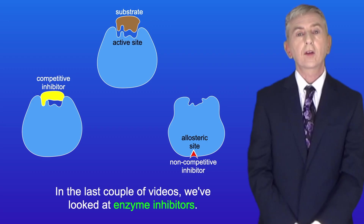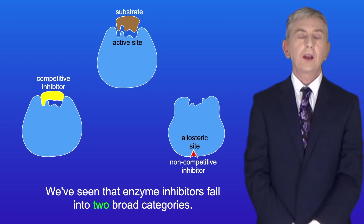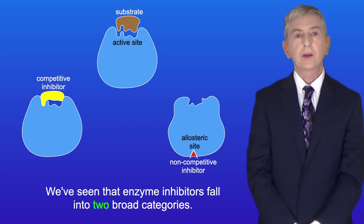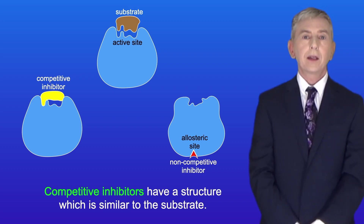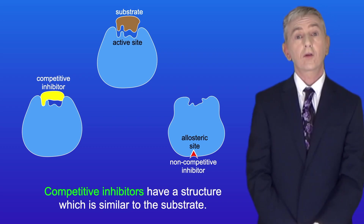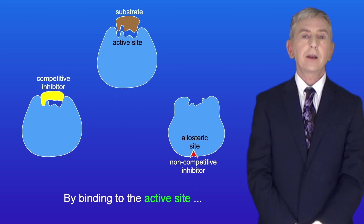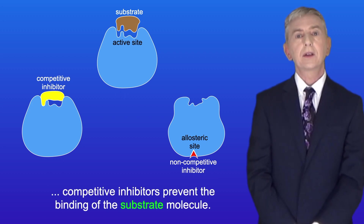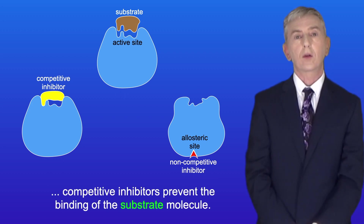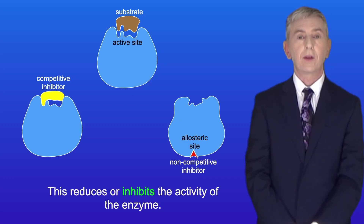In the last couple of videos we've looked at enzyme inhibitors. We've seen that enzyme inhibitors fall into two broad categories. Competitive inhibitors have a structure which is similar to the substrate. By binding to the active site, competitive inhibitors prevent the binding of the substrate molecule, and this reduces or inhibits the activity of the enzyme.